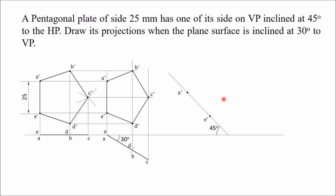To reproduce the pentagon, take length A-dash C-dash with center A-dash and draw an arc. Then take the same length E-dash C-dash with center E-dash and draw another arc — they intersect at point C-dash. Once you have C-dash, take length A-dash B-dash and draw an arc from A-dash, and take length E-dash D-dash and draw an arc from E-dash. Note that A-dash B-dash and E-dash D-dash are equal lengths. Then take C-dash D-dash as radius and draw an arc from C-dash to get D-dash, and use the same length for C-dash B-dash to get B-dash. Join all points in sequence with thick lines — this is your final front view.